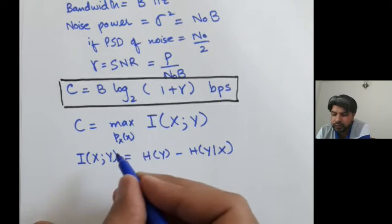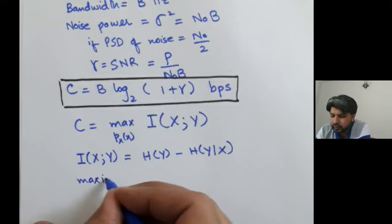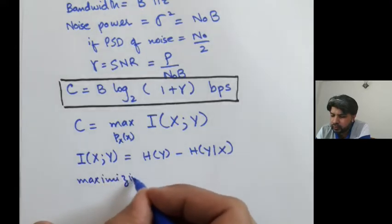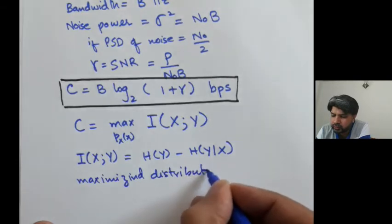The maximizing distribution, which maximizes this information, is also the Gaussian distribution.